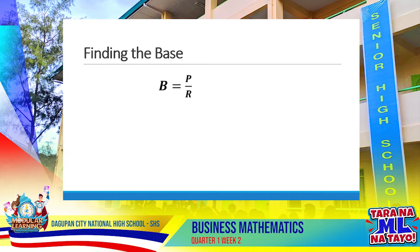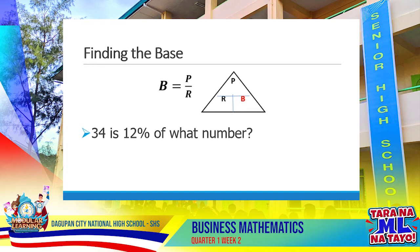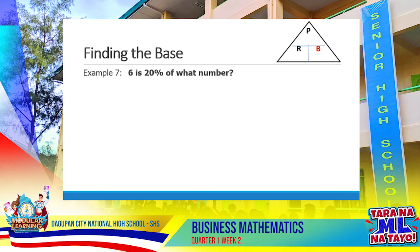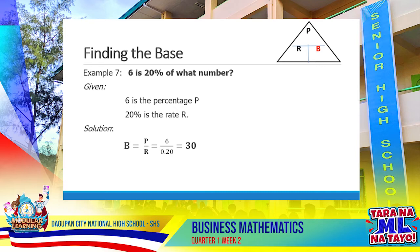In this problem, we use the formula: Base equals percentage divided by rate. Statements regularly used are: 34 is 12% of what number? or 12% of what number is 34? Example: 6 is 20% of what number? The percentage is 6 and the rate is 20%. Applying the formula, Base equals percentage divided by the rate: 6 divided by 0.20 equals 30.